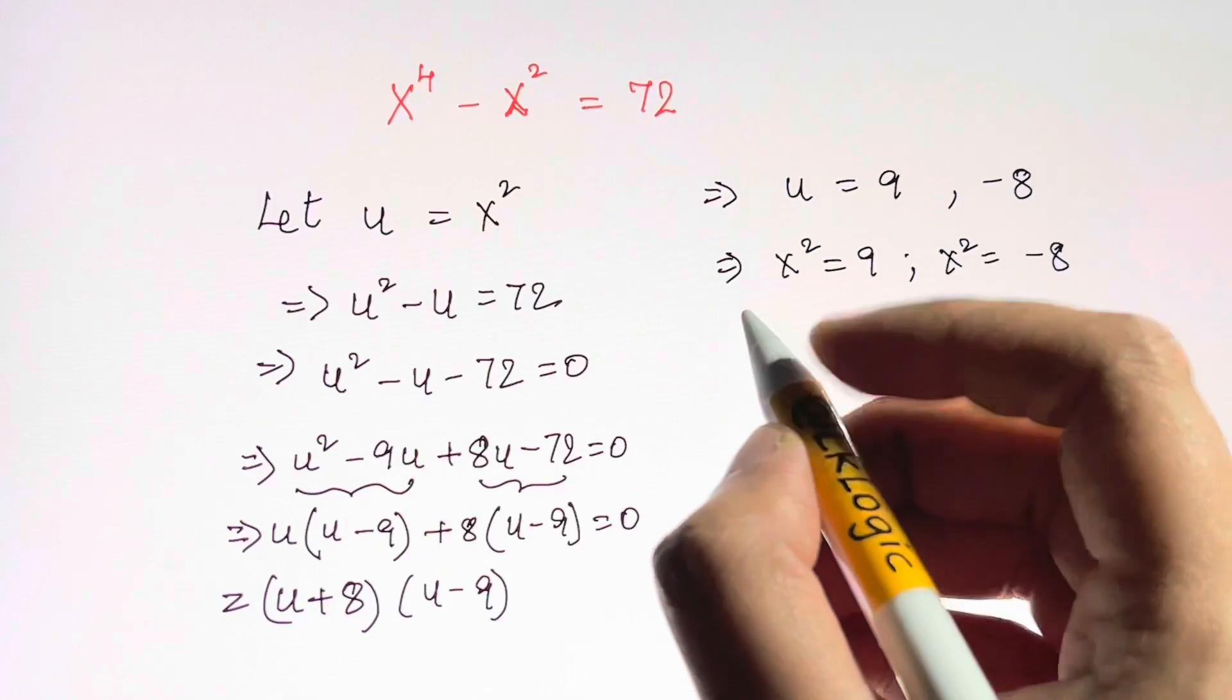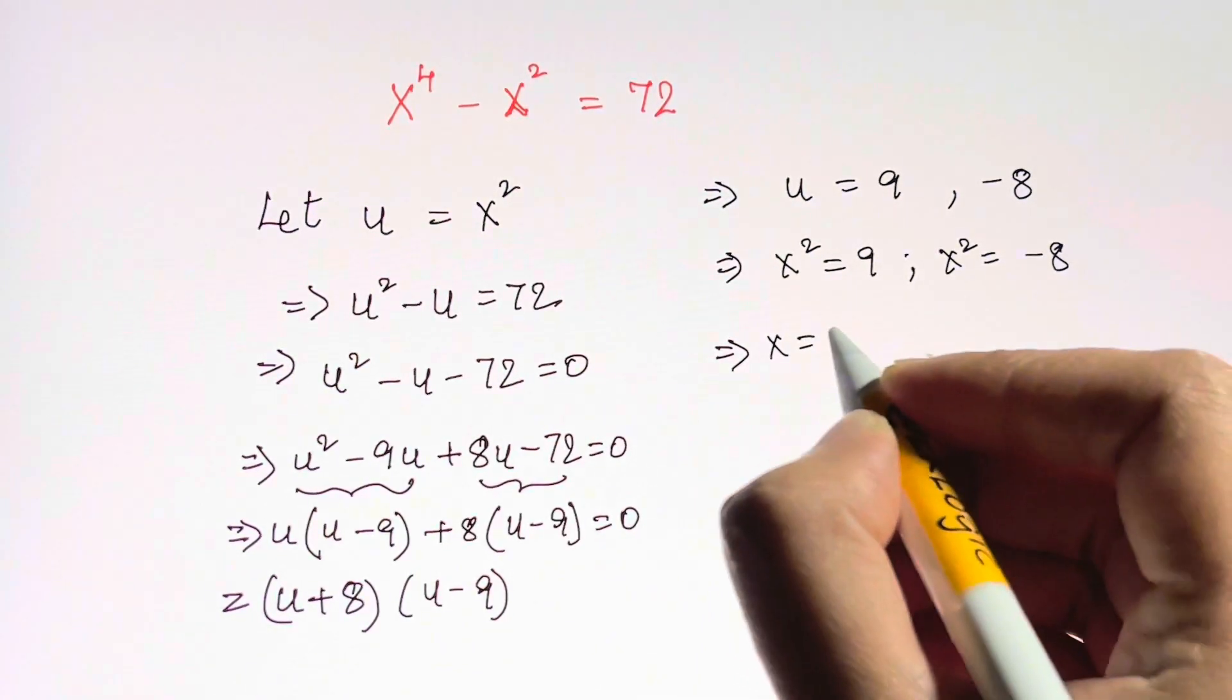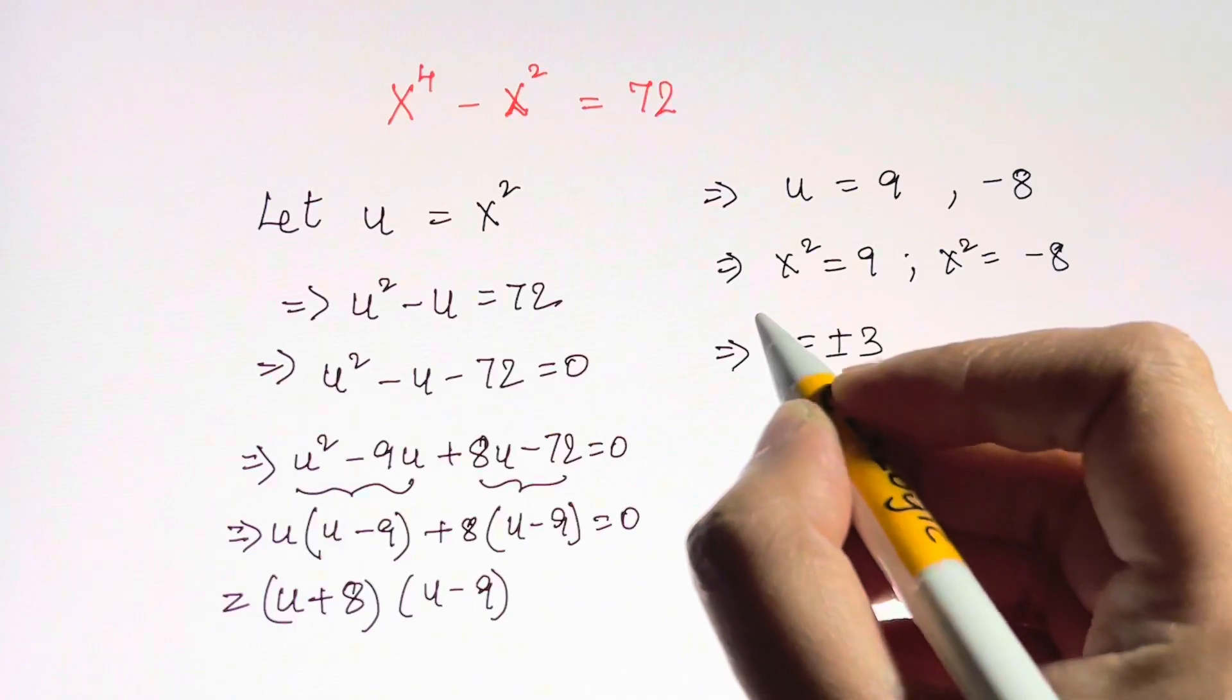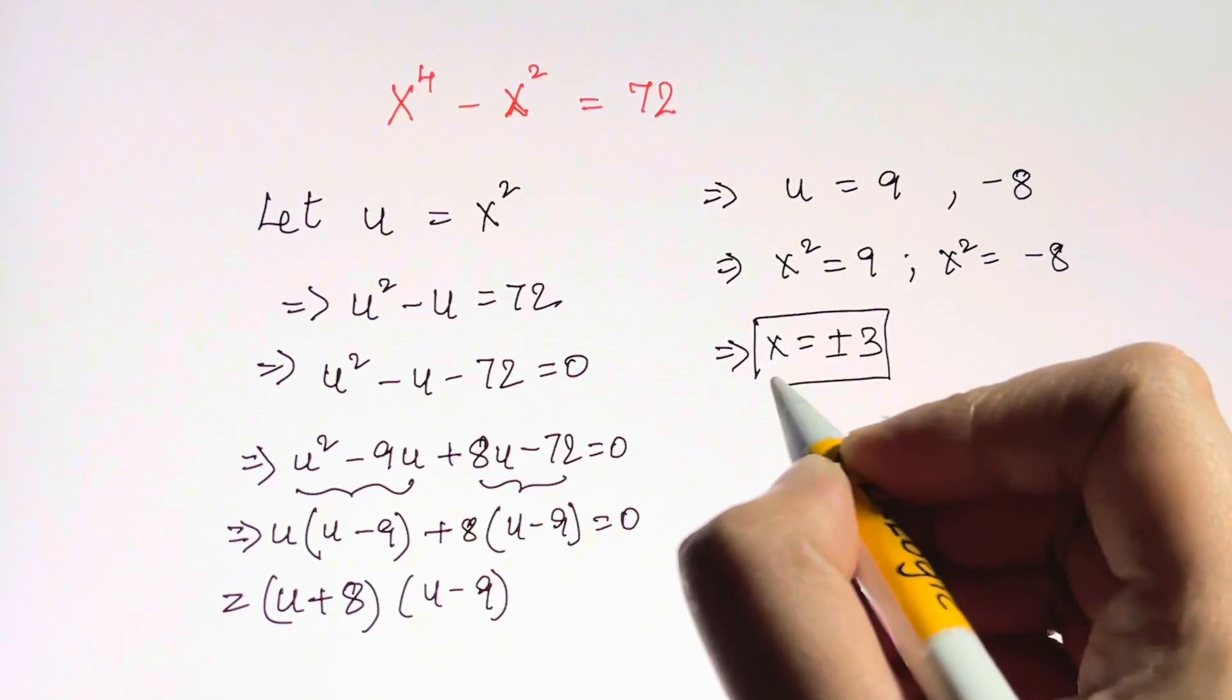For this one, x is equal to plus or minus 3, so we've got two solutions of x: one is plus 3 and another is negative 3.